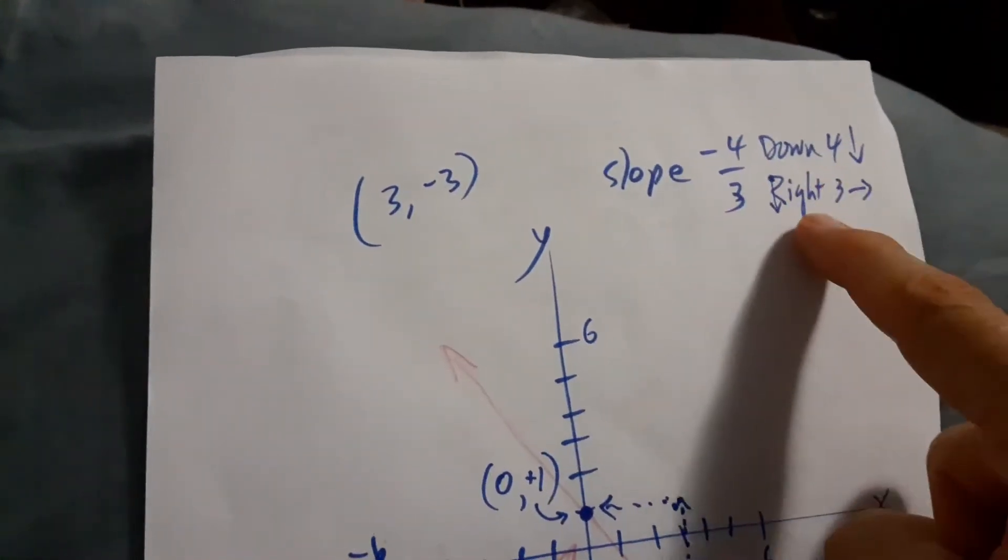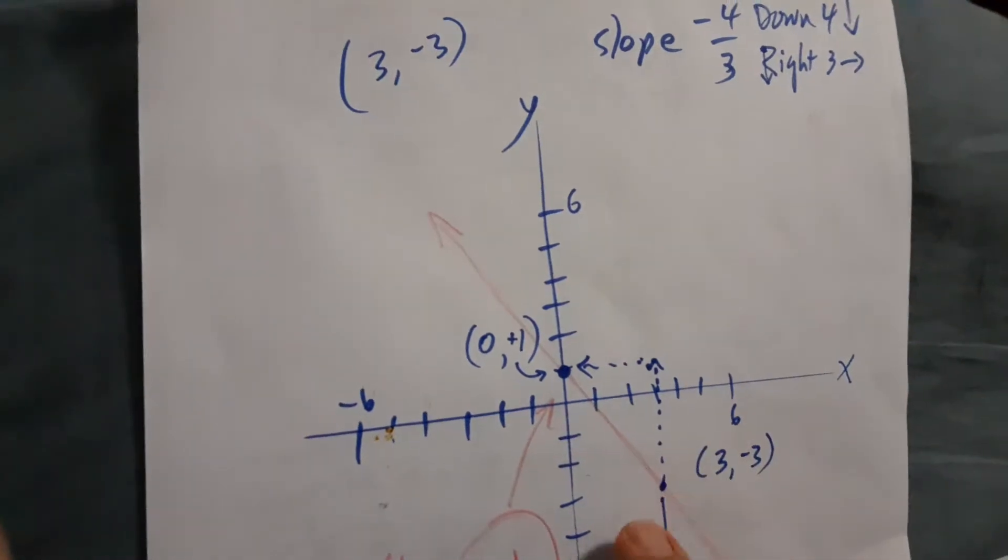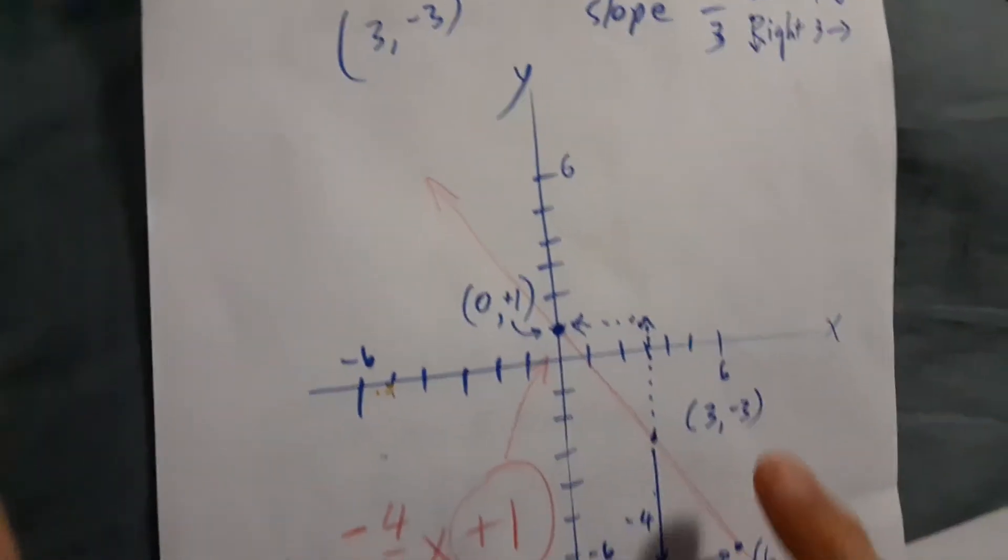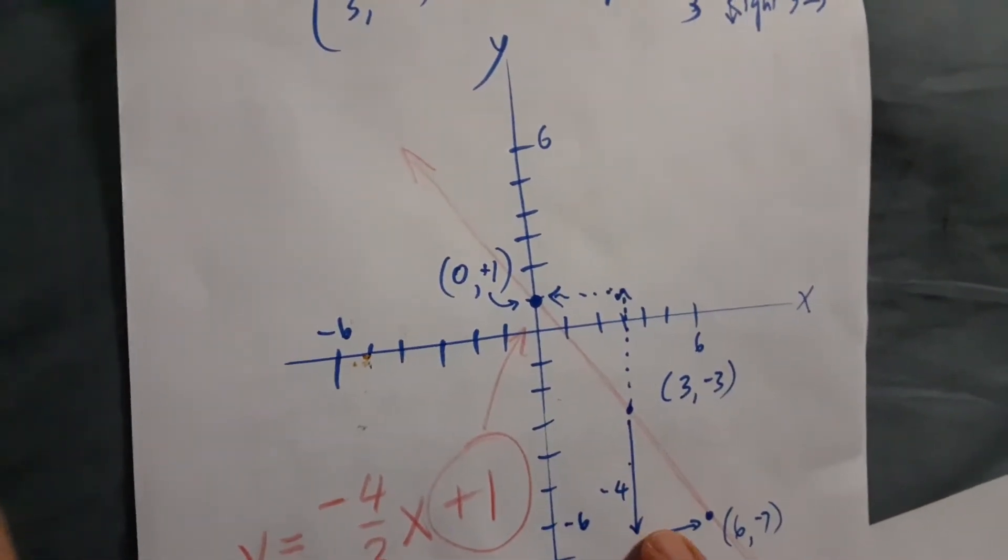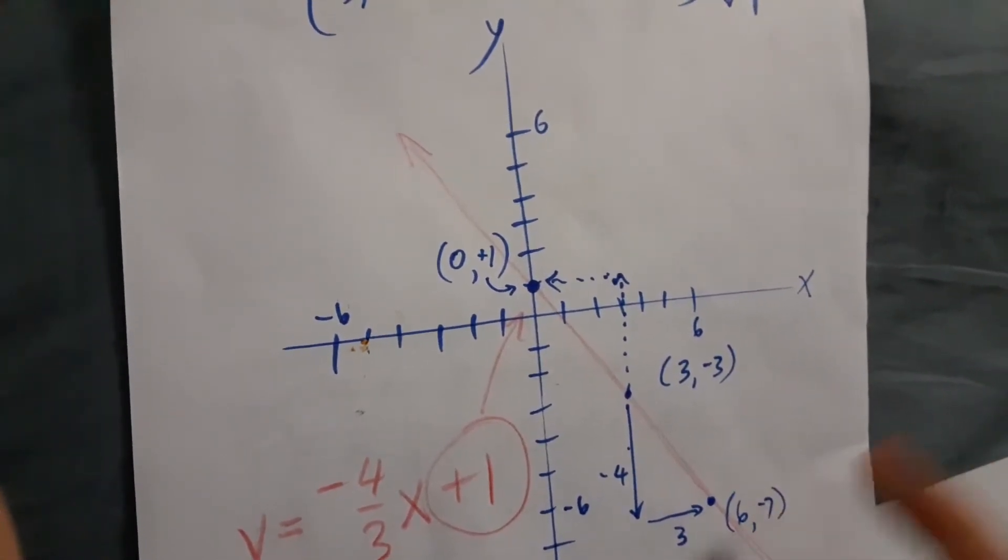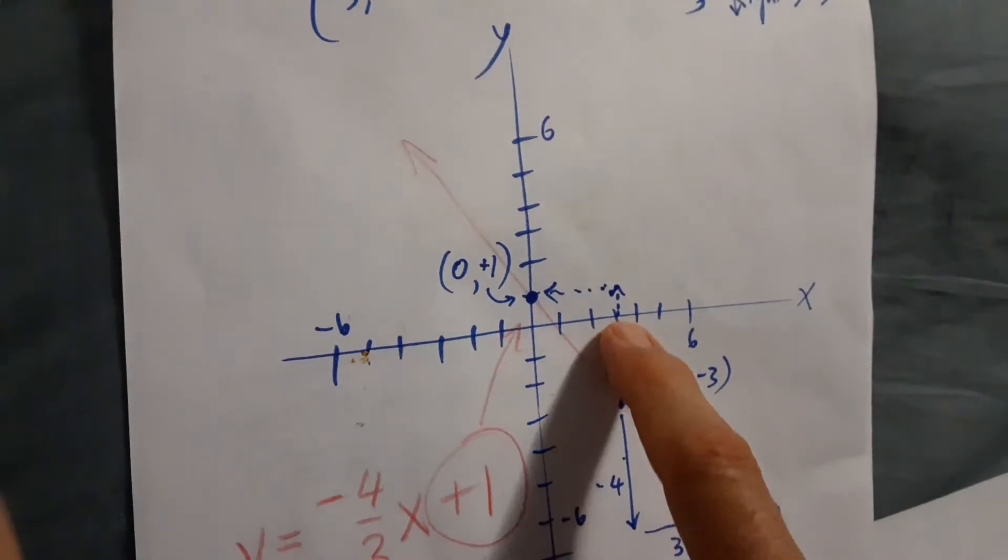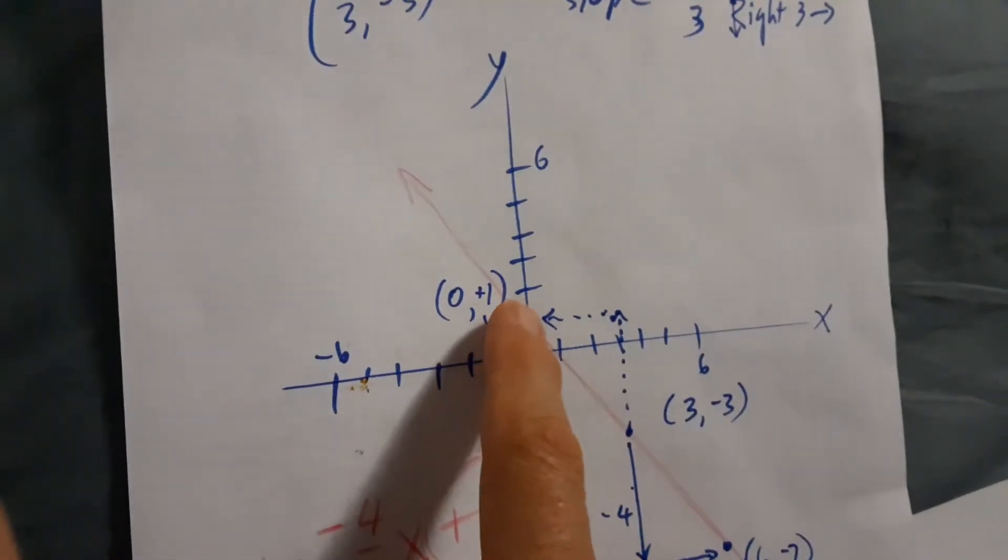New slope is down 4 to the right 3. And if we're choosing this point of 3, negative 3, if I go down 4 to the right 3, that point's going to be 6, negative 7. Slope is good, because I can also go up 4 and to the left 3. That's what I want to get.